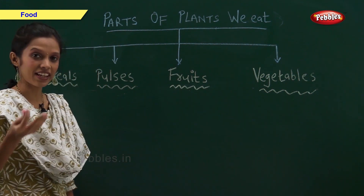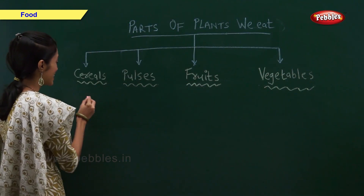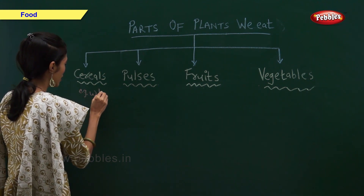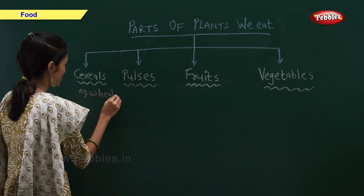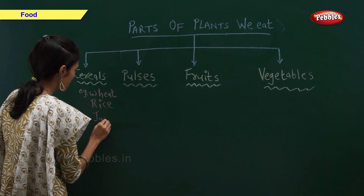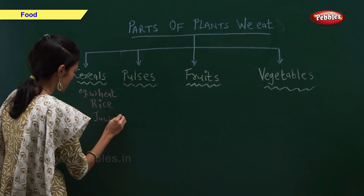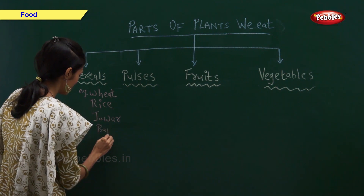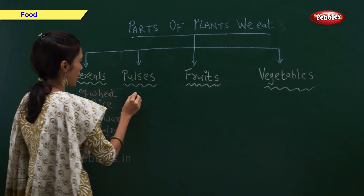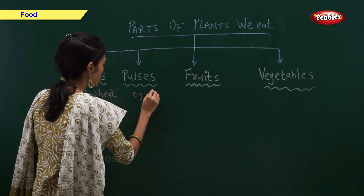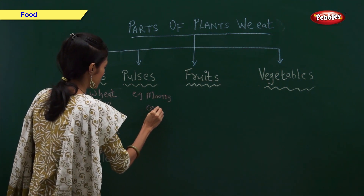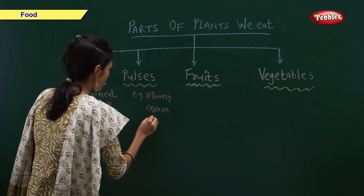Now, let us see their examples. Cereals — examples of cereals are wheat, rice, jowar and bajra. Pulses — examples of pulses are moong, gram and chana dal.